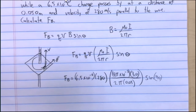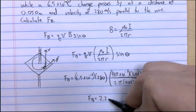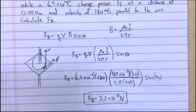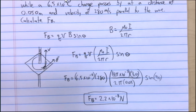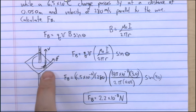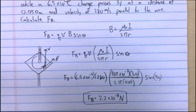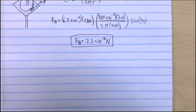Punching that into a calculator gives an answer of 2.2 times 10 to the negative 8th newtons. This force will pull the charge toward the wire.